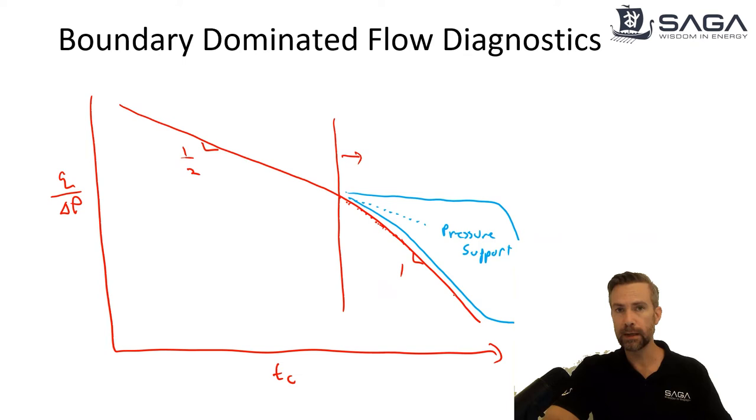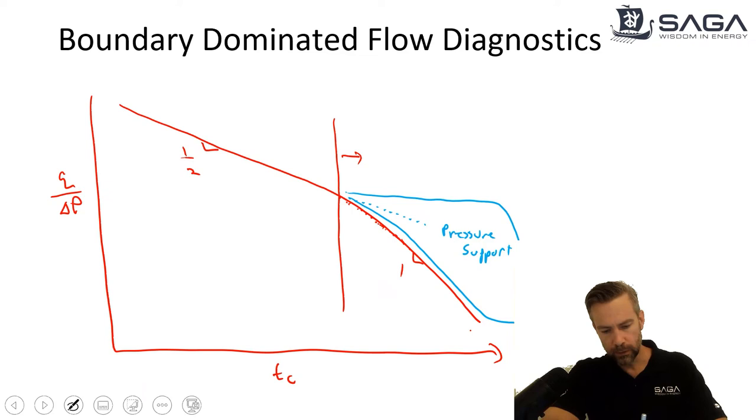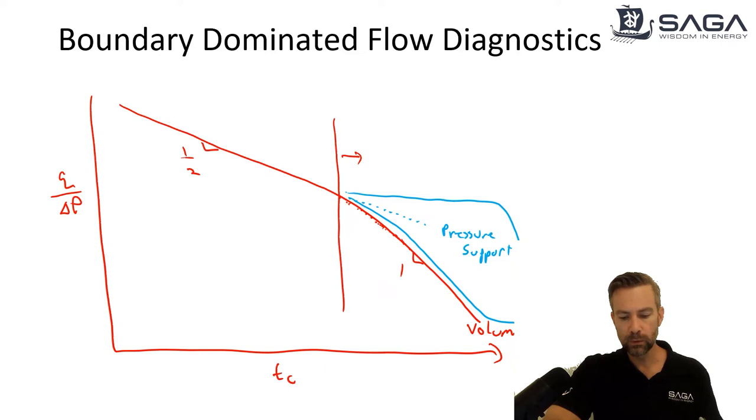By the way, if the data stays right on that unit slope line, of course, that is our tank type, that's our classic tank type volumetric signature. So I'm going to, I don't want to forget about that. Let's write that here in red. So our unit slope is our standard volumetric depletion. So we can call that volumetric or tank type depletion. All other things being equal, most wells will behave this way because they're drilled in a reservoir. And once we see all the boundaries, we'll start depleting. And that's sort of our engineering 101.